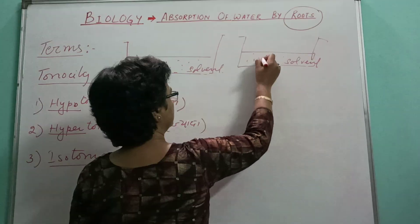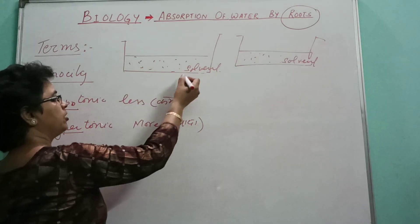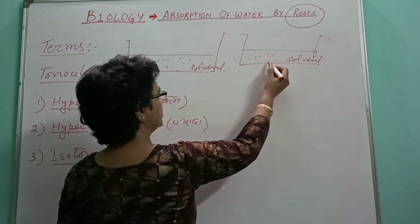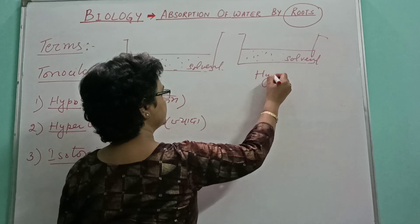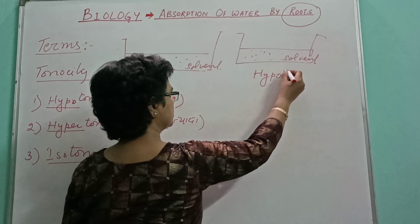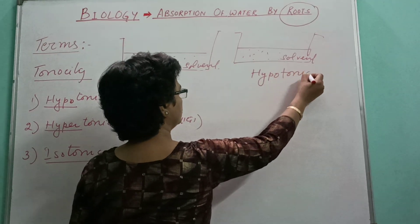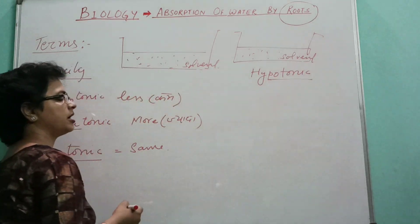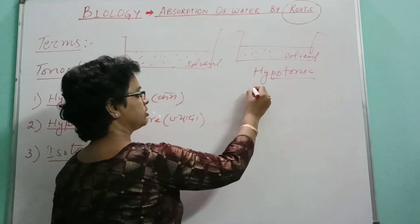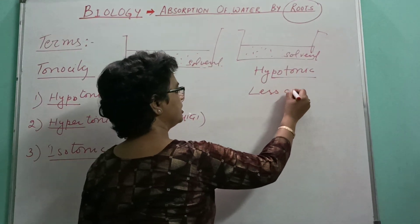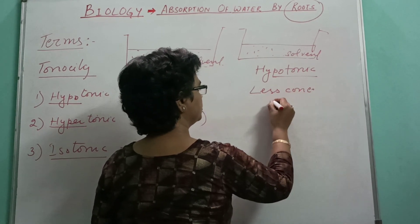When the amount of the solute is less, the concentration of the solution is low, so the solution is termed as hypotonic. We can use the term less concentrated solution.